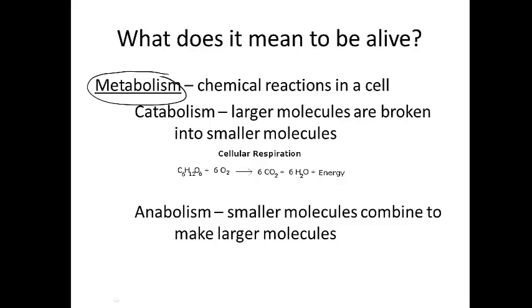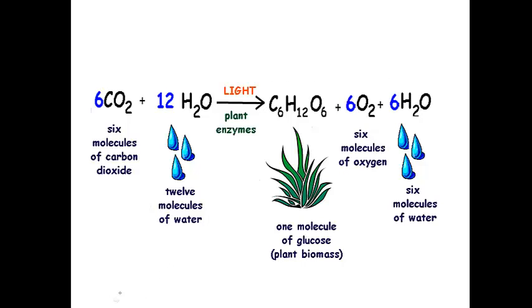We could divide it up into two types of reactions. There are reactions where you have larger molecules, like glucose, being broken down into smaller molecules, like CO2 and water. This is cellular respiration — a very important reaction that happens in our mitochondria, which we'll study later in the unit. When reactions go from large molecules into smaller components, that's called catabolism. And when smaller molecules combine to make larger ones, that's called anabolism. An example of that would be photosynthesis, the opposite of cellular respiration.